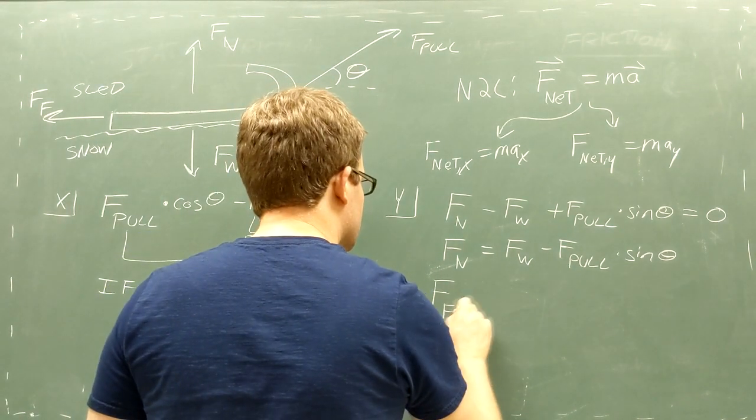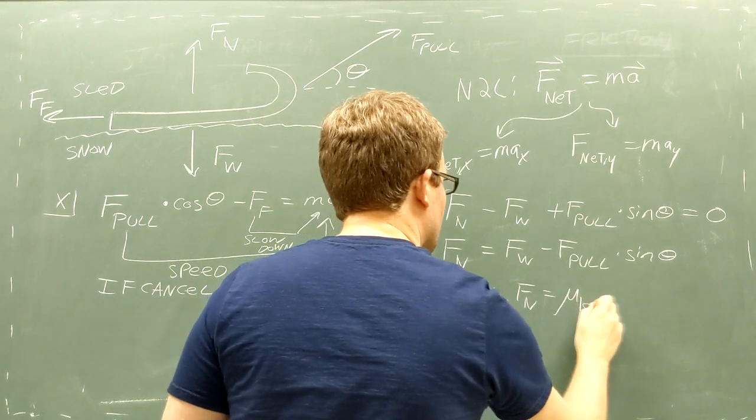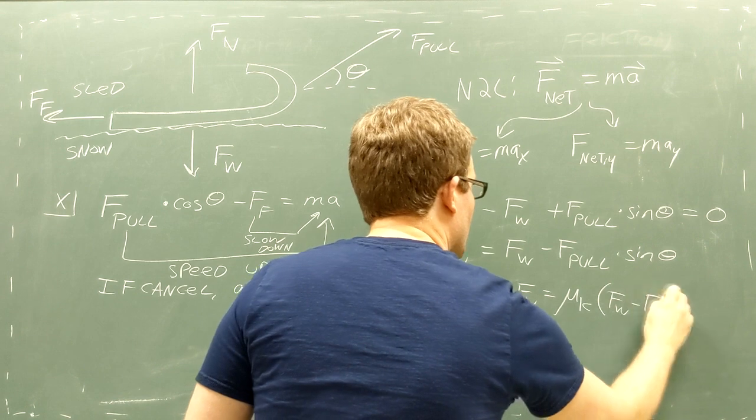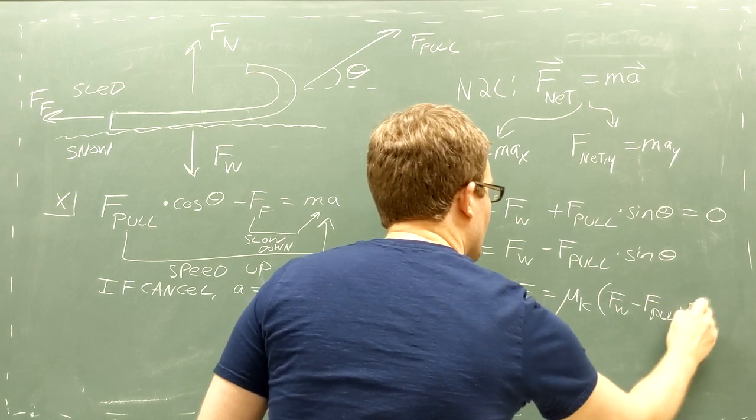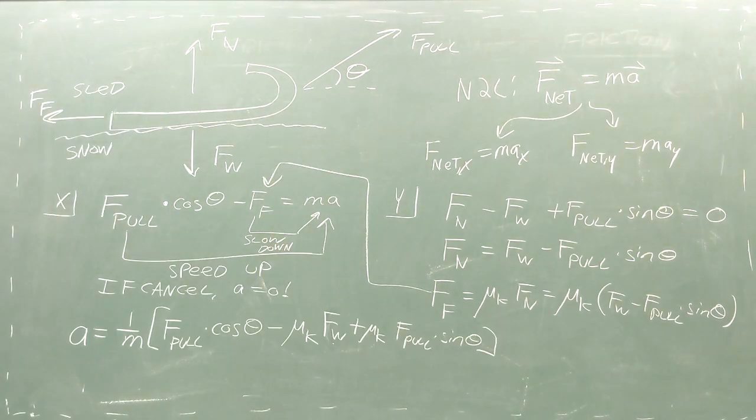This equation for the normal force is helpful, since we can use it to determine the force of friction. Remember, the force of kinetic friction is equal to the coefficient of kinetic friction times the normal force. By using this relationship in our equation for the x components, we can directly calculate the acceleration of the sled just from the pulling force vector, the sled's mass, and the coefficient of kinetic friction between the sled and the snow.